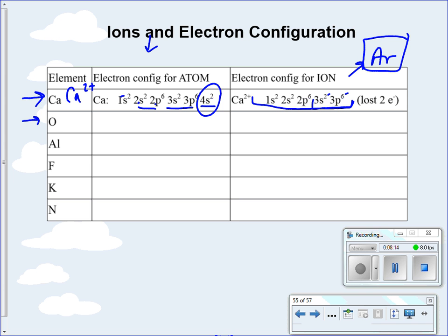Let's look at fluorine. Fluorine's normal electron configuration is 1s2, 2s2, 2p5. Fluorine has 5 electrons in that p orbital. It wants to look like a noble gas — it's in the column of the halogens — so it's going to gain one electron and become fluorine negative 1, or fluoride. It's going to end up being 1s2, 2s2, 2p6, filling that entire energy level 2 so that we have 8. That is the electron configuration for neon. Go ahead and fill out the rest of this table based on your knowledge of electron configuration of ions.